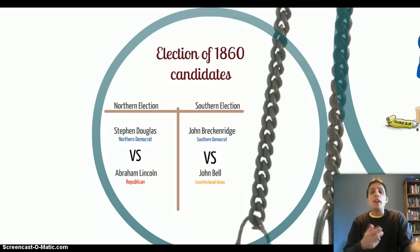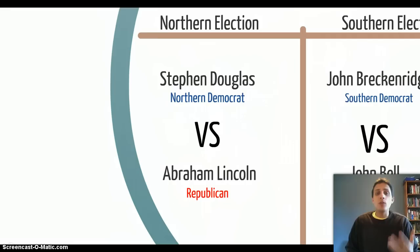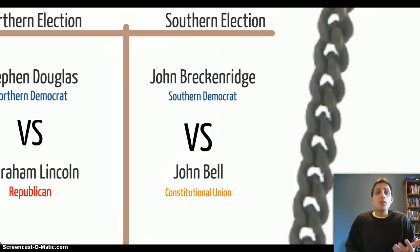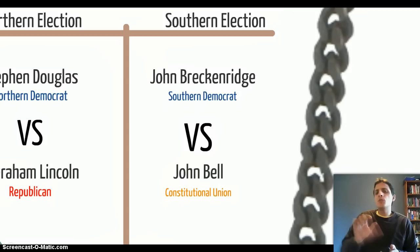In the Northern election, the Northern Democratic candidate is going to be Stephen Douglas, and the Republican candidate going against Douglas is going to be Lincoln — kind of reminiscent of the 1858 Senate race in Illinois. In the South, the Southern Democratic candidate is going to be John Breckinridge. He's going to be going against John Bell of the Constitutional Union Party, which is really the upper South breaking away and forming their own political party because they don't agree with Breckinridge as their choice.